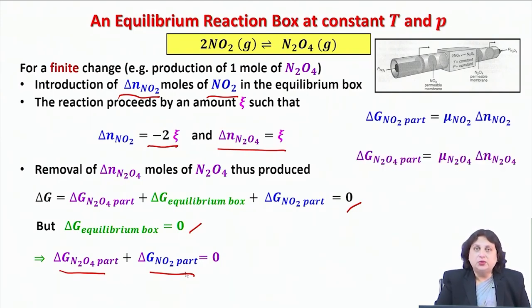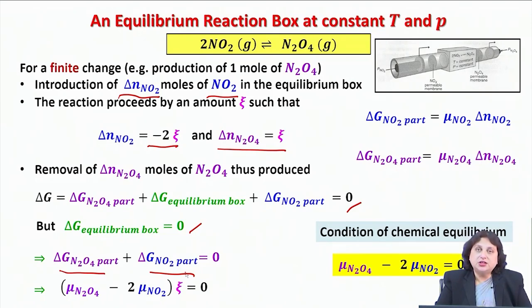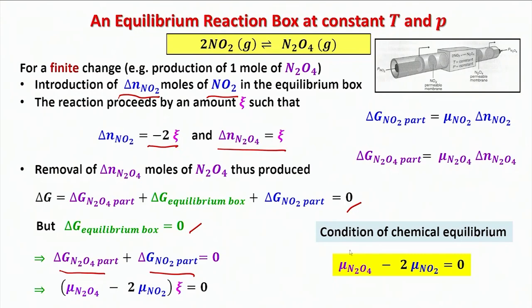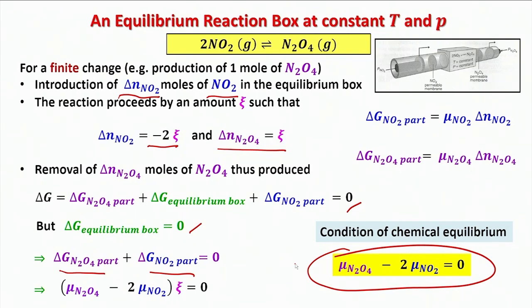Combining as before, and since ξ is a non-zero quantity, the condition of chemical equilibrium is the same as before. The point I would like to emphasize is that irrespective of whether it is a finite or an infinitesimal perturbation, the condition of chemical equilibrium depends on the μ values of N2O4 and NO2 and also on the stoichiometric coefficients of these two species in their balanced chemical equation.